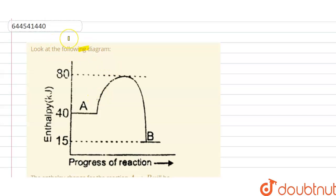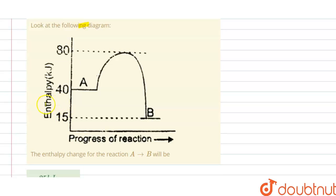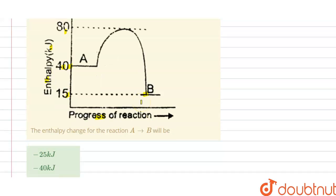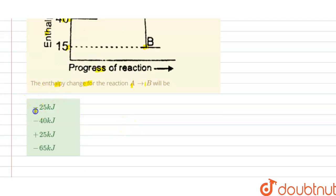Look at the following diagram. We have the enthalpy and progress of reaction. The enthalpy is given here in kilojoules. Initially, the enthalpy is 40, and finally it's 15. We have to find the enthalpy change for the reaction A to B. Options A, B, C, D are given, so we have to choose the correct option.